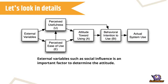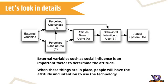External variables such as social influence are an important factor to determine the attitude. When these things are in place, people will have the attitude and intention to use the technology.